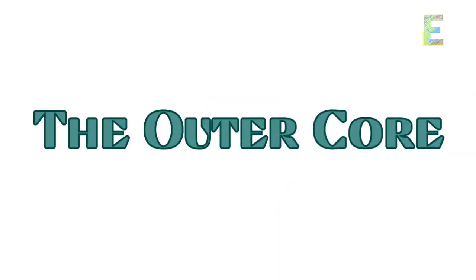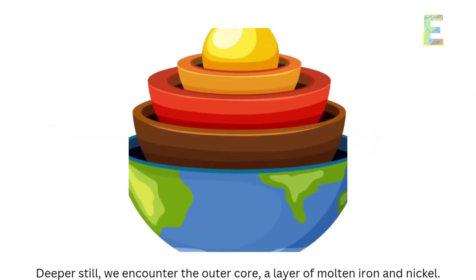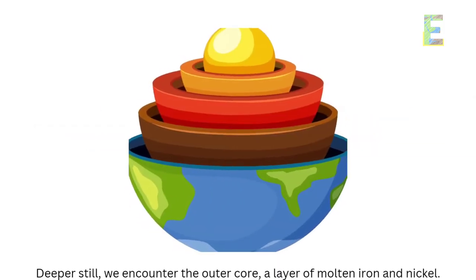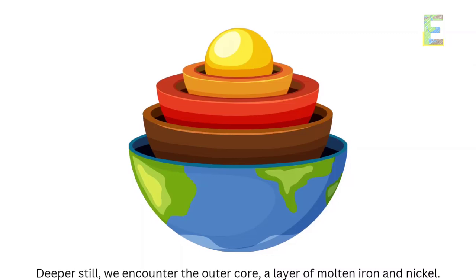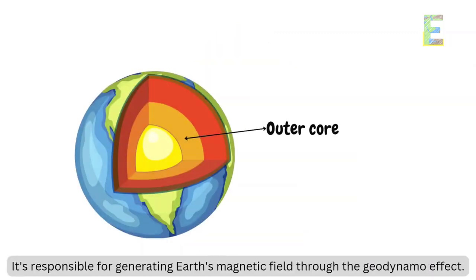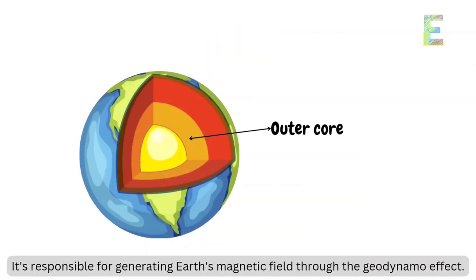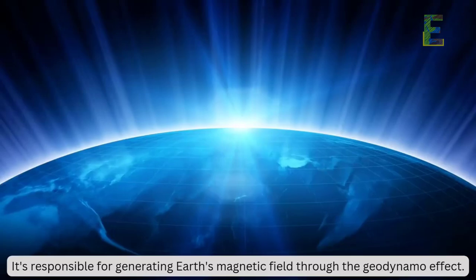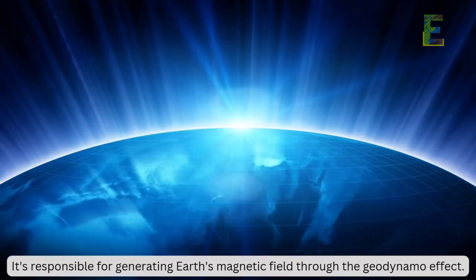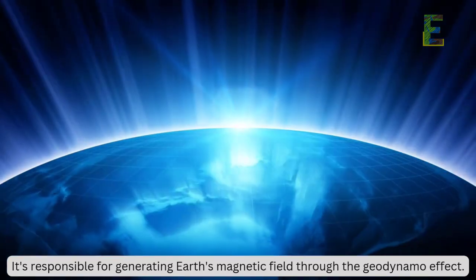The outer core: deeper still, we encounter the outer core, a layer of molten iron and nickel. It's responsible for generating Earth's magnetic field through the geodynamo effect.